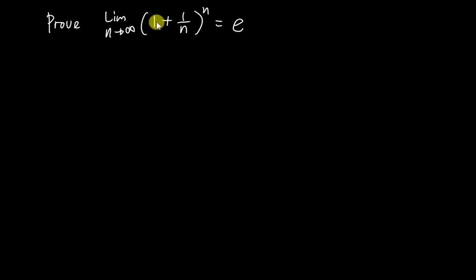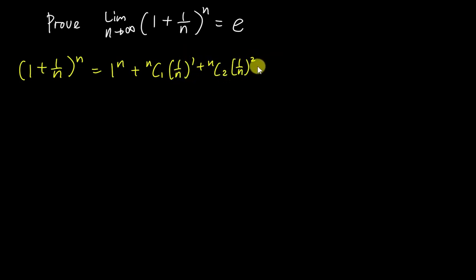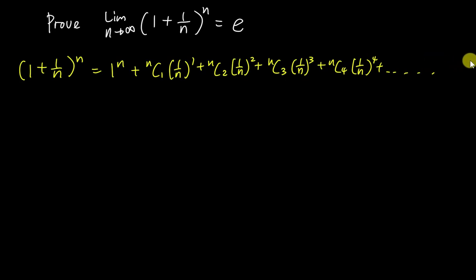To prove this, I need to use the binomial expansion on (1 + 1/n)^n. The first term is 1^n which equals 1. Then we have nC1 times (1/n)^1, plus nC2 times (1/n)^2, plus nC3 times (1/n)^3, plus nC4 times (1/n)^4, and so on. I'll expand up to nC4 for now — that should be more than enough.